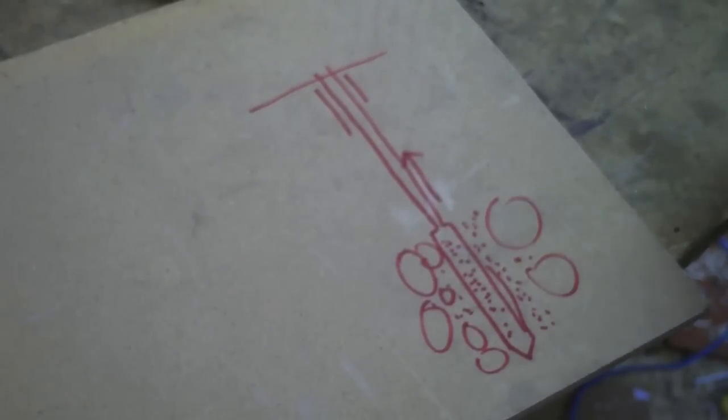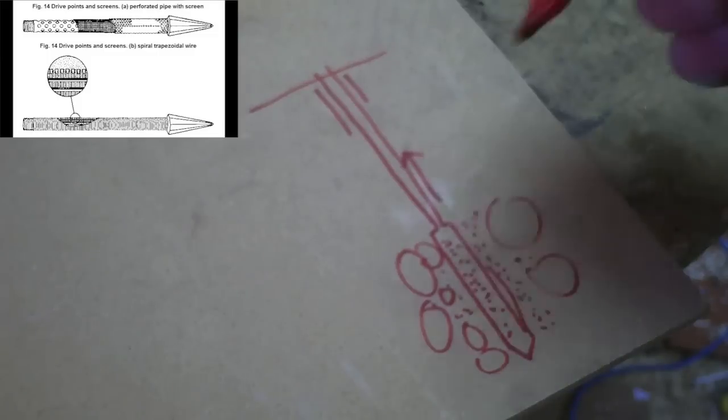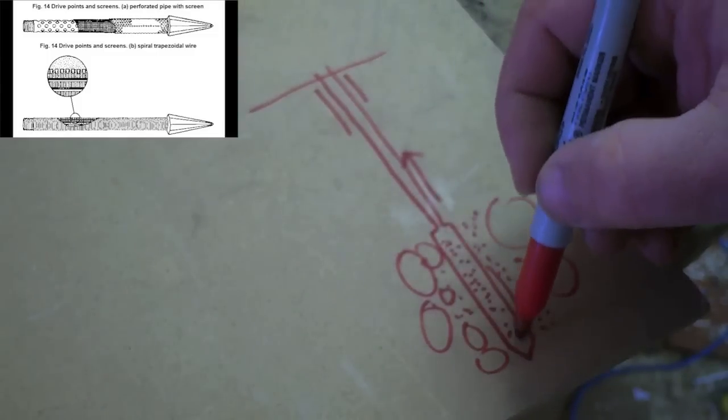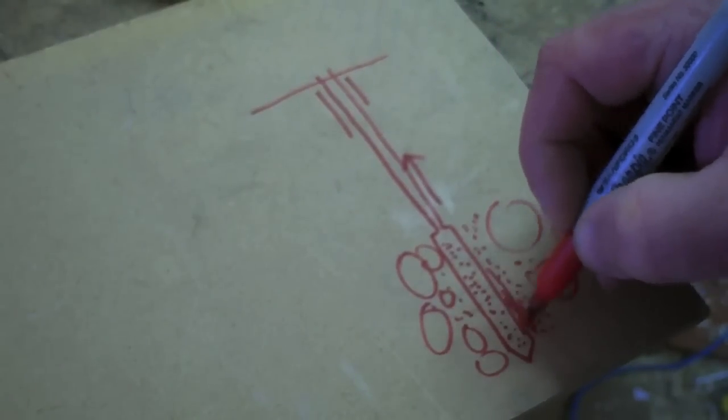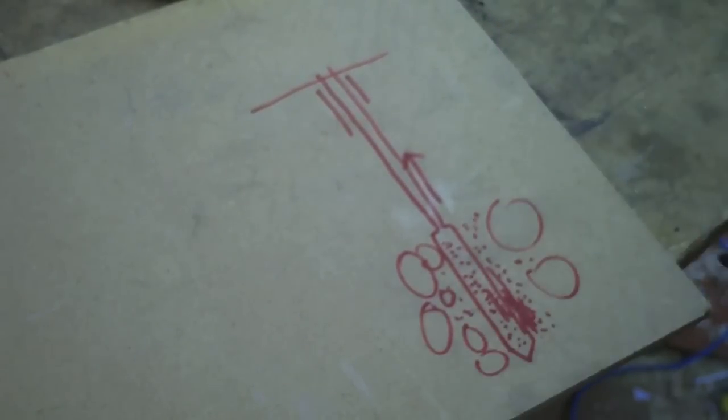But on reflection, that sand point should be filtering all those sand particles. It shouldn't be big stuff coming out, not like beach sand. The screens on the sand point are finer than that. It makes me wonder if maybe a big rock or something was hit and part of the screen on the sand point might have been damaged.